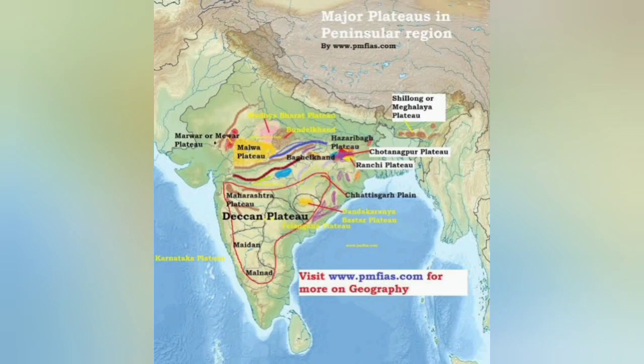The second division is the Eastern Plateau, that is the Chota Nagpur Plateau and Meghalaya Plateau. The third is the Deccan Plateau, which includes Mahadev Hills, Kaimur Hills, Makal Range, Western Ghats, Nilgiri, Annamalai Hills, Palani Hills and Cardamom Hills, Eastern Ghats and Mahendra Giri, Maharashtra Plateau, Mahanadi Basin, Garhjat Hills, Karnataka Plateau, Telangana Plateau and Tamil Nadu uplands.